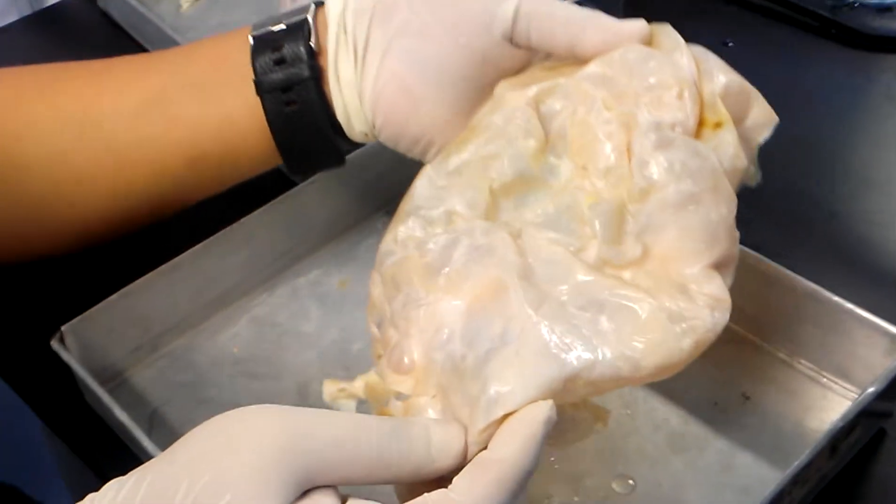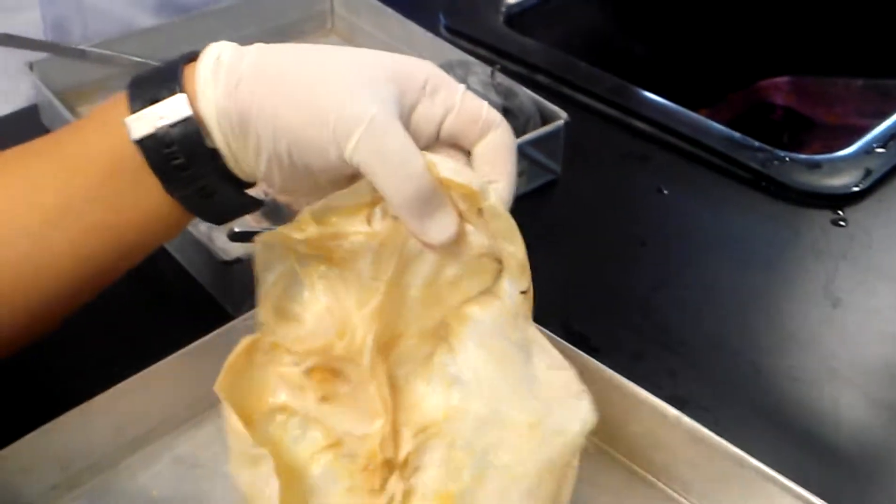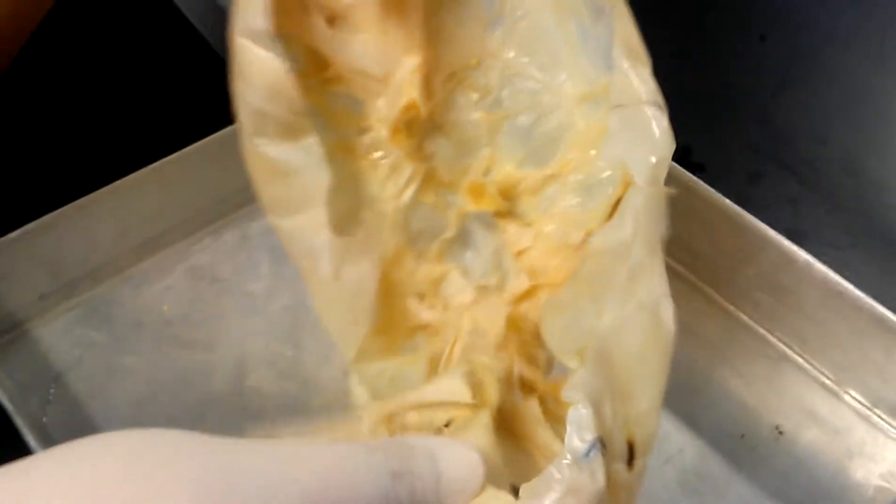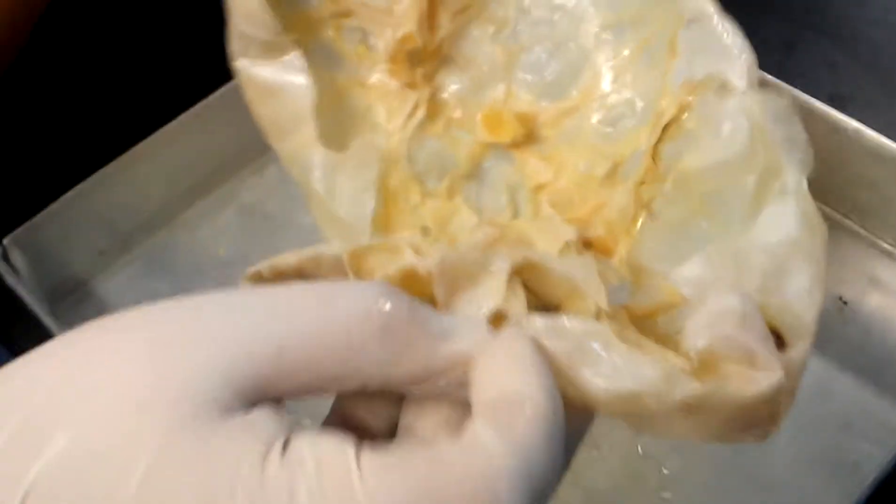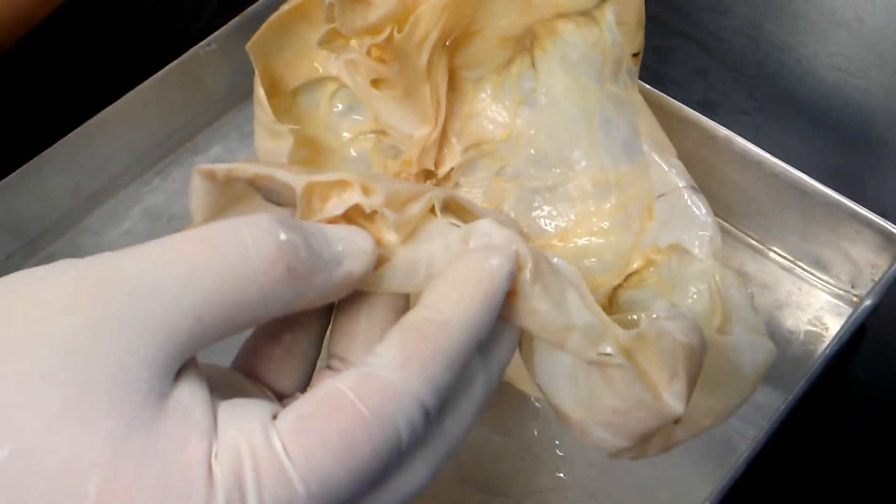When you open this large ovary, you will see inside that you have multiple locules or iba-ibang compartments. That's what you call locules. This is previously collapsed.